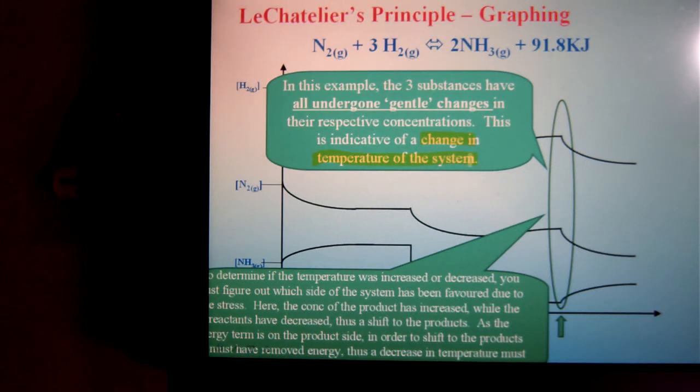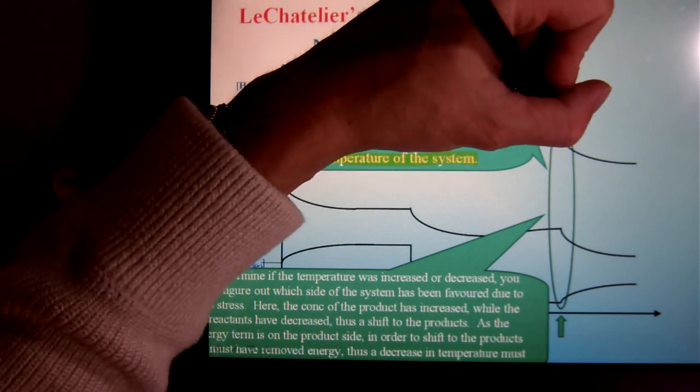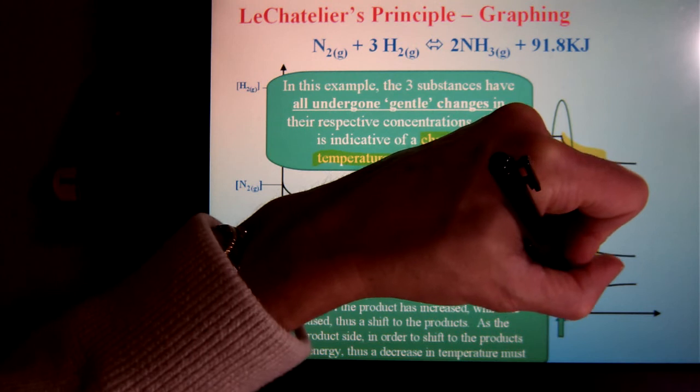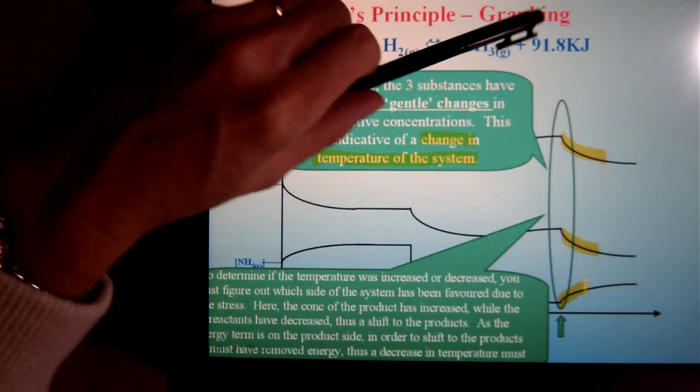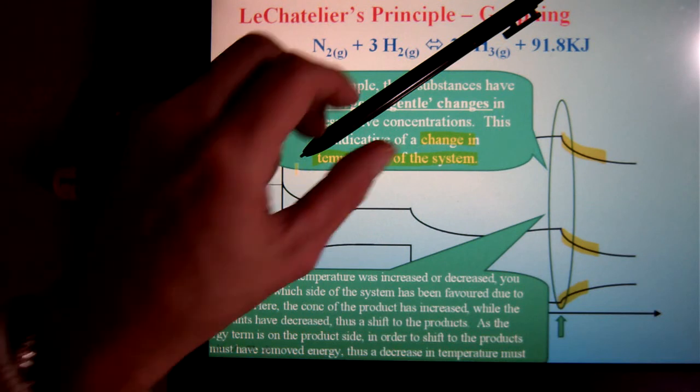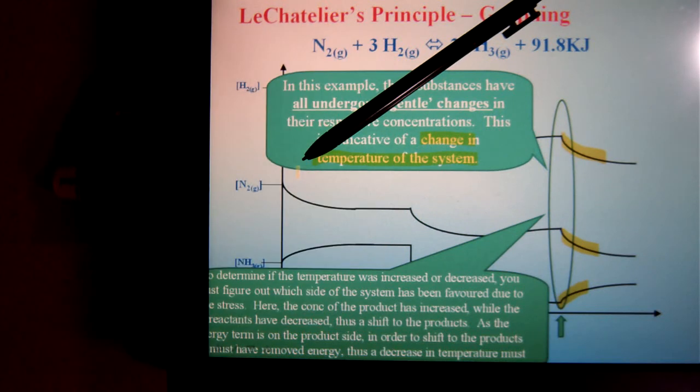Okay, so then to figure out whether it's gone up or down, let's look at the shift again. Well, my reactants have both decreased, my product has gone up. Which means I must have shifted like that. Well, if I've shifted like that, that means I must have shifted to the right, shifted to the products.